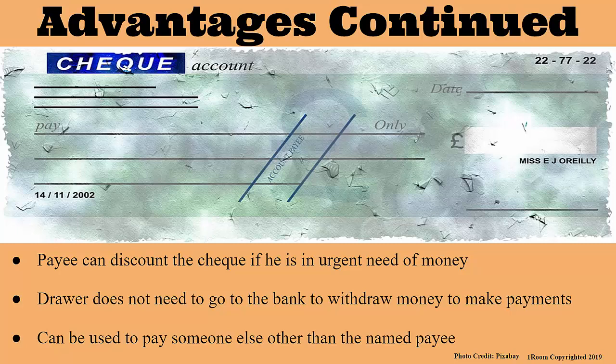How does that work? The original payee must sign the cheque as a way of endorsing it, and of course the name of the third party is also written on the cheque. Understood. We also have disadvantages of using cheques as well.